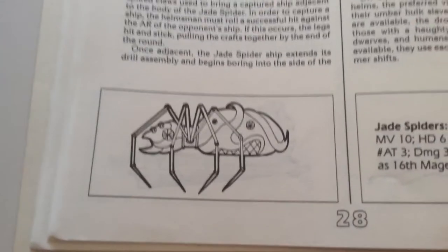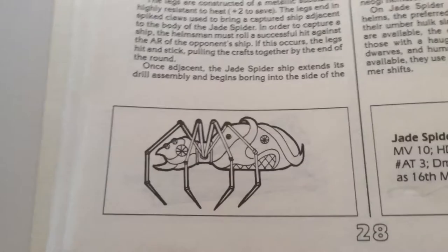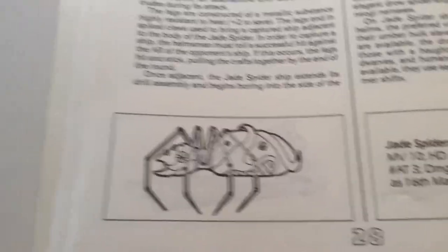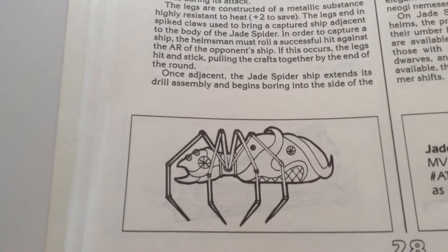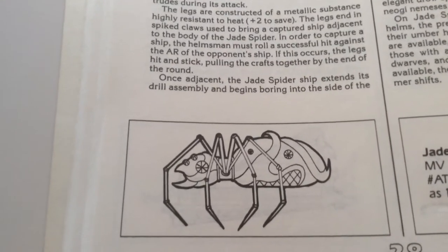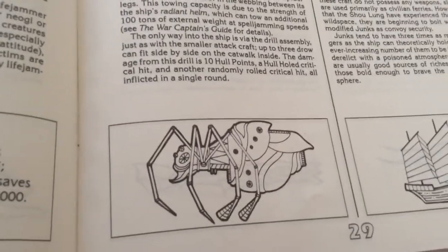One of the supplements came out with ships for the drow, which makes no sense at all because they're an underdark race. What are they doing in space? But they had this, which is a small ship, 20 tons, and this, which is a big hundred-ton heavy ship.